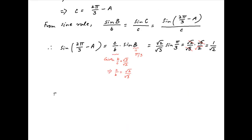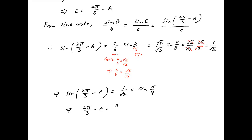In other words, sine of 2pi upon 3 minus A is equal to 1 upon root 2, which is equal to sine of pi upon 4. Therefore, 2pi upon 3 minus A is equal to pi upon 4, which implies that A is equal to 2pi upon 3 minus pi upon 4, which is equal to 5pi upon 12, which is the required answer.